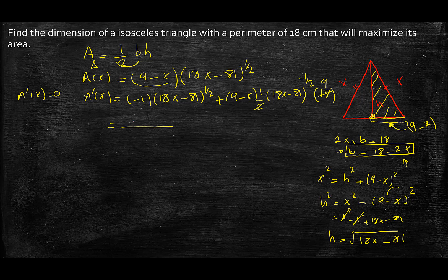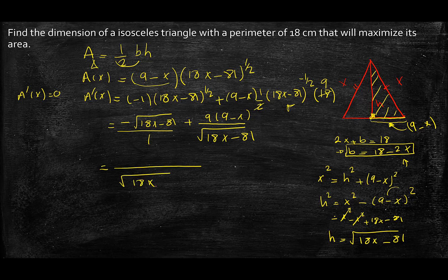So right now, what I would like to do is to take common denominator. The last thing I want to do is expand at this point because we want to just simplify everything. So I will have minus 1 times 18x minus 81. And then here I have plus 9 times 9 minus x over square root of 18x minus 81.